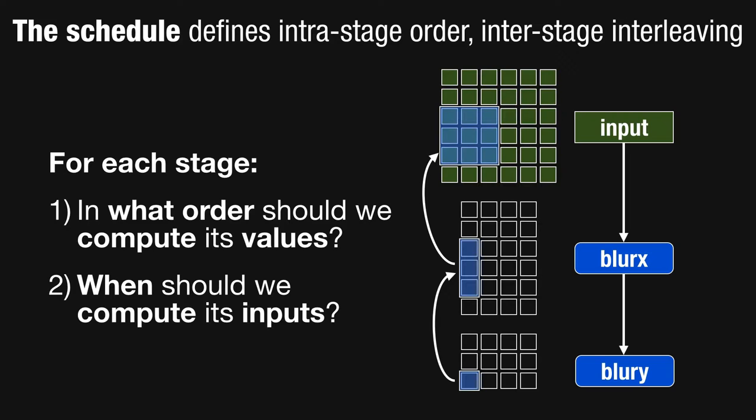Second, when should we compute pieces of each stage's inputs, and at what granularity? This defines the interleaving of evaluation between producers and consumers in the pipeline, which determines the locality we can exploit. Effectively, we've created a language as part of Halide for modeling the space of scheduling choices, and composing these choices in different ways for different stages makes different optimization trade-offs globally for an entire pipeline.